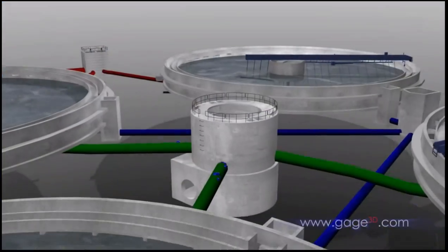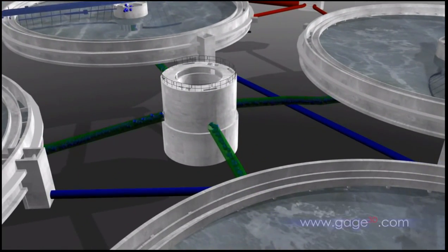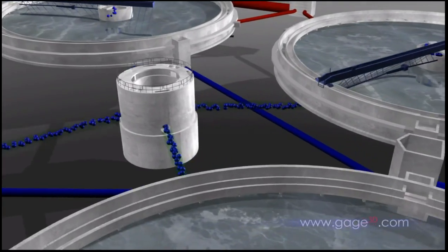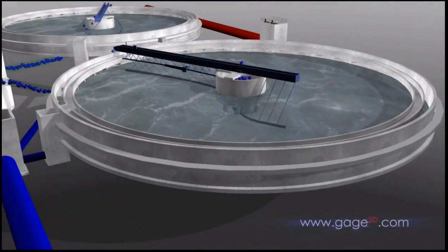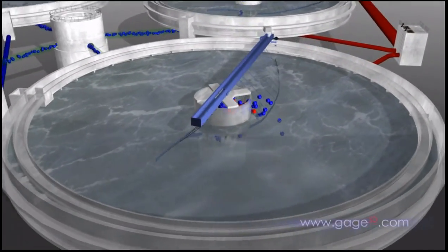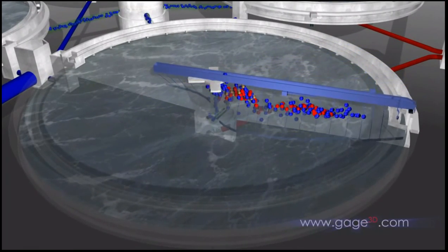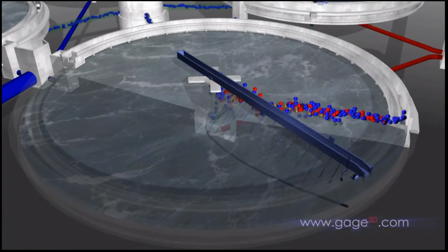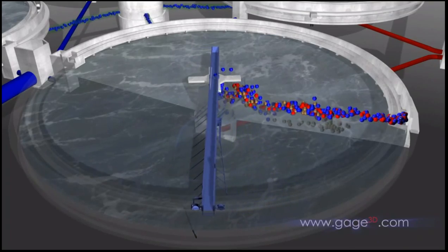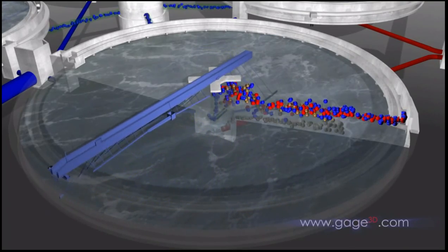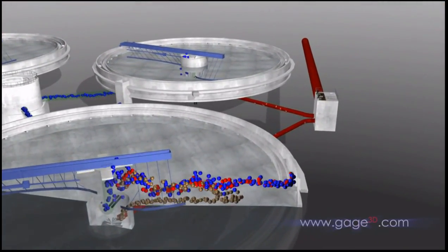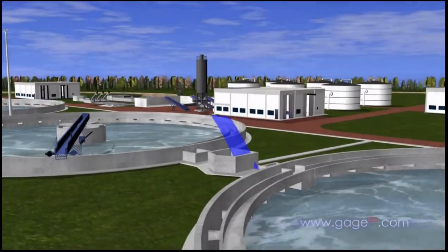Next, water goes through secondary clarification, which works similarly to primary clarification. Again, solids are sent to the solids treatment process, and water moves on to be further purified. Some of the solids, known at this point as activated sludge, are sent back to the aeration basin. This activated sludge helps maintain healthy populations of beneficial bacteria that reduce solids and remove nutrients.